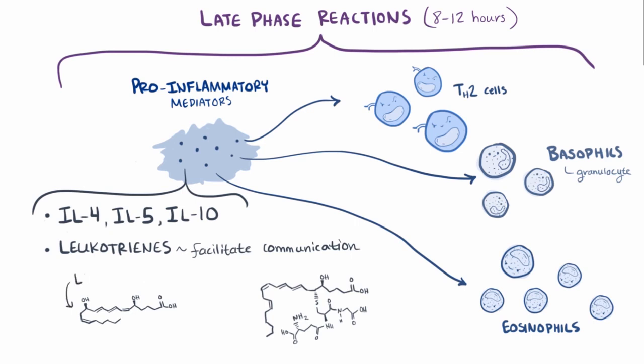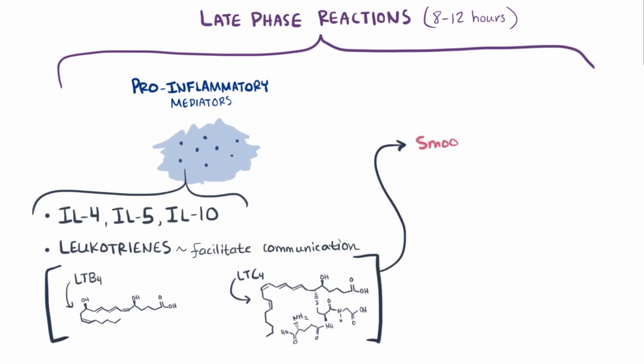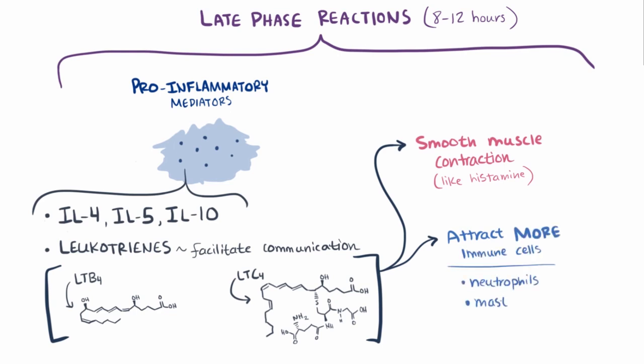Two leukotrienes in particular—LTB4 and LTC4—can not only cause smooth muscle contraction and damage to the epithelium, like histamine, but they can attract immune cells like neutrophils, mast cells, and eosinophils to their location even after the allergen is long gone.